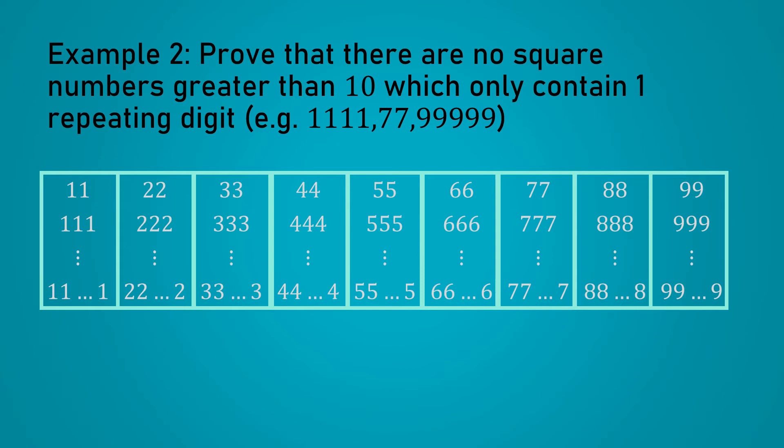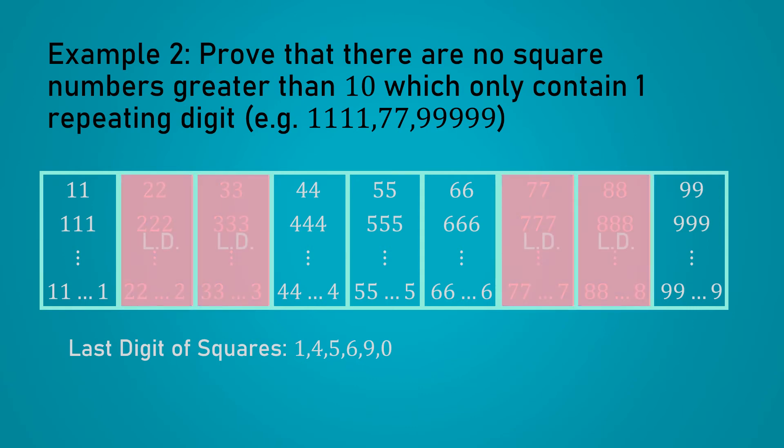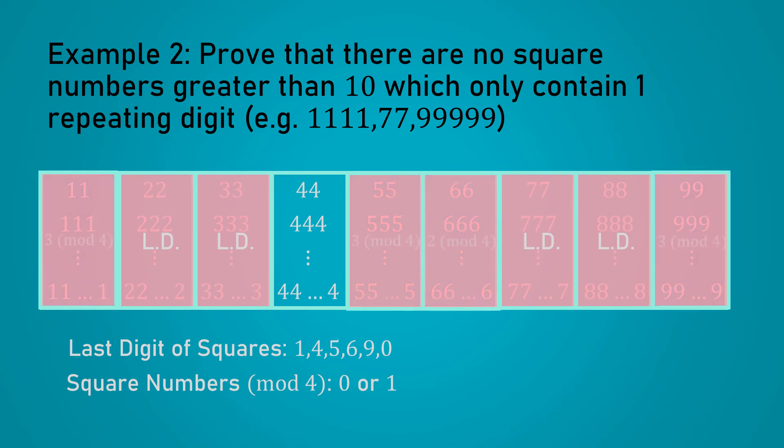Looking at these 9 cases, recall from our last video that the last digit of square numbers can only be 1, 4, 5, 6, 9 or 0. So that immediately settles 4 of our 9 cases, which is pretty nice. Looking at the other 5 cases, we notice that for each column, the last 2 digits are fixed. And that means in turn that their value modulo 4 is fixed. Now remember that square numbers must be 0 or 1 modulo 4. If we check each of these columns modulo 4, we realize that 4 of the 5 are immediately ruled out because they are congruent to either 2 or 3 modulo 4.